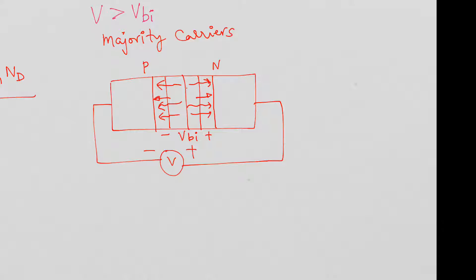There is no majority carrier movement in reverse bias. However, on the N side there is a very small number of holes — minority carriers — and on the P side there is a very small number of electrons. These minority carriers can move: electrons from the P side move toward the positive terminal, and holes from the N side move toward the negative terminal. But this is a very, very small current.